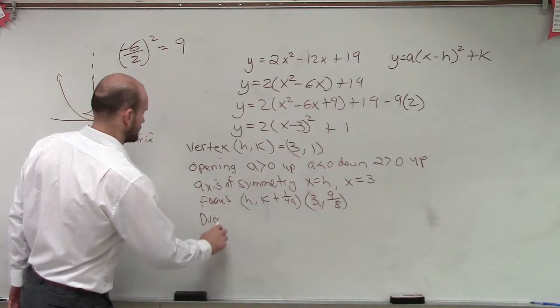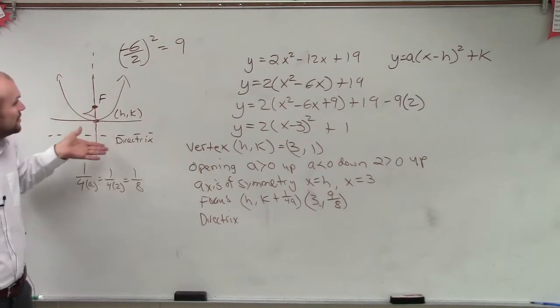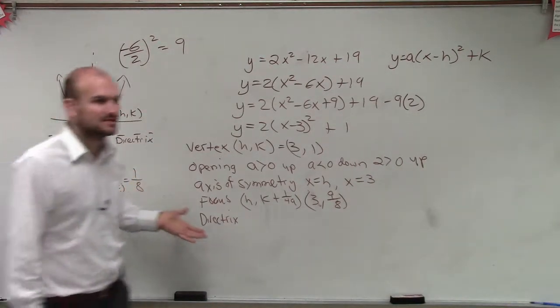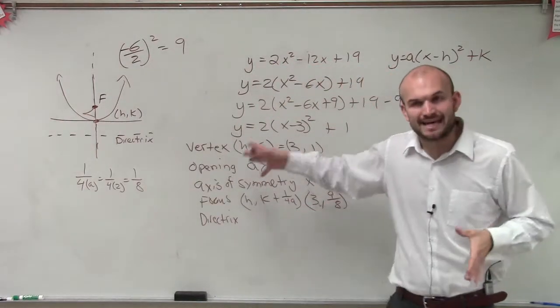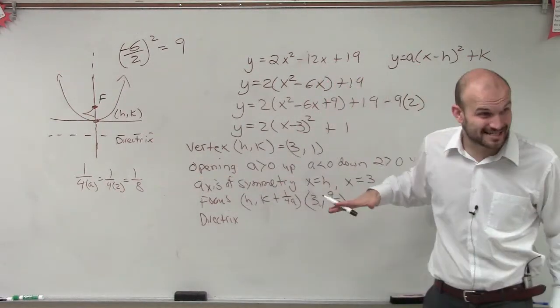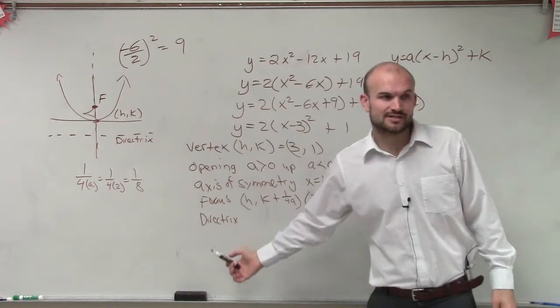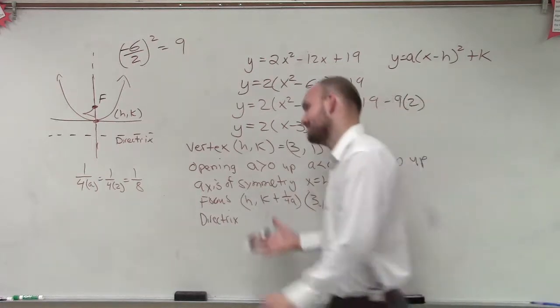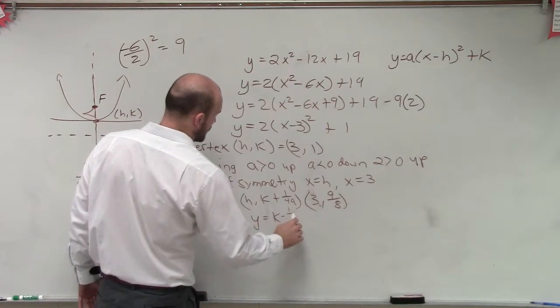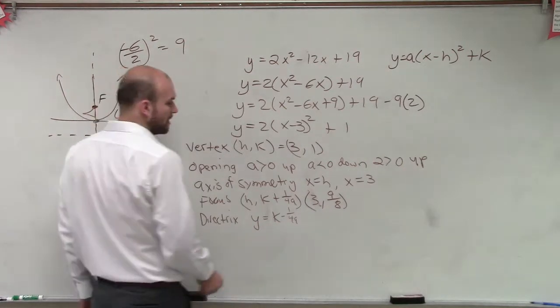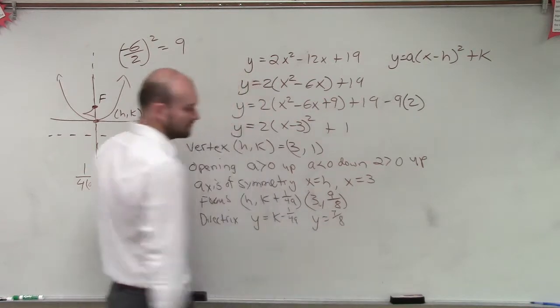Our directrix, well, if we're adding 1 eighth to get to our focus, that means we have to do what to get to our directrix? Subtract 1 eighth. So then we just take 1 minus 1 eighth, which will be 7 eighths. But remember, our directrix is a line. It's not a point. And it's also a horizontal line. So if our vertical line was vertical, we said it was x equals, then our directrix is horizontal, so therefore it has to be y equals. So y equals k minus 1 over 4a. We determined y equals 1 divided by 4a is 1 eighth. So our directrix is y equals 7 eighths.